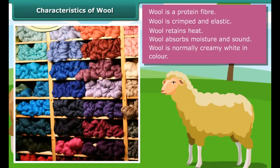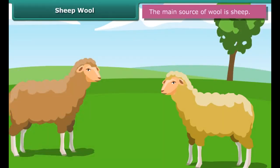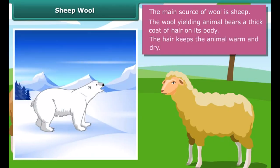Wool is a protein fiber. It is crimped and elastic. Crimp makes wool bulky and helps it retain heat. Wool absorbs moisture and sound because it is hollow. Wool is normally creamy white in color, but it can also be black, brown or silver in color. Wool is hypoallergenic — in other words, it causes fewer allergies in human beings.